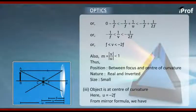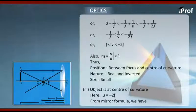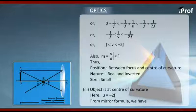Let's consider another ray hitting the pole directly. It will get reflected off making equal angle with the principal axis. We find the point of intersection and we denote it by B dash. Hence we get the image denoted by A dash, B dash.